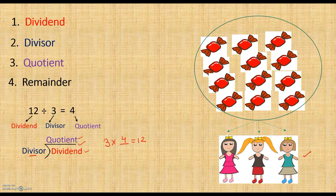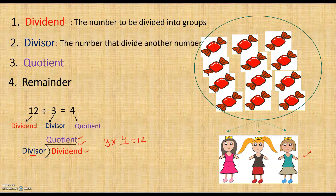Let's revise the terms again. First, the dividend — the dividend is the number to be divided into groups. Second, the divisor — the divisor is the number that divides another number. Third, the quotient — the quotient is the answer in division. Now let's understand the remainder with another example.